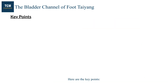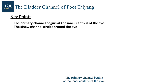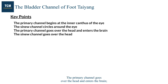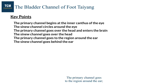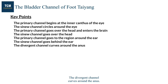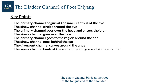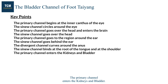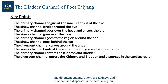Here are the key points. The primary channel begins at the inner canthus of the eye, while the sinew channel circles around the eye. The primary channel goes over the head and enters the brain; the sinew channel goes over the head. The primary channel goes to the region around the ear; the sinew channel goes behind the ear. The divergent channel curves around the anus. The sinew channel binds at the root of the tongue and at the shoulder. The primary channel enters the kidneys and bladder, while the divergent channel enters the kidneys and bladder and disperses in the cardiac region.